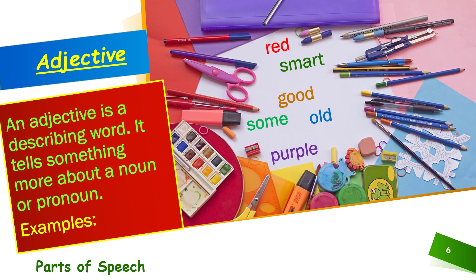Smart. Rohan is a smart boy. So, what sort of a boy is he? Smart. So, 'smart' is an adjective. Similarly, she is a good girl — what kind of a girl is she? Good. So, 'good' is an adjective. There are many more adjectives, for example: some, old, purple, etc. Whatever you are using to describe a noun or a pronoun, that word is an adjective.